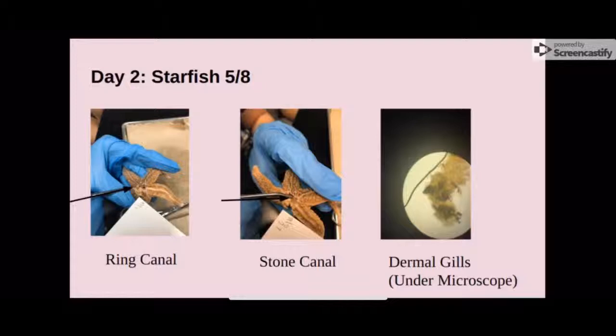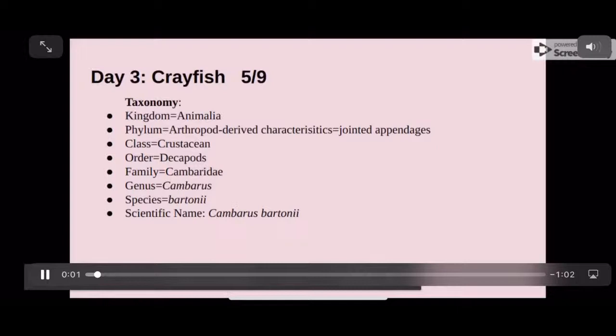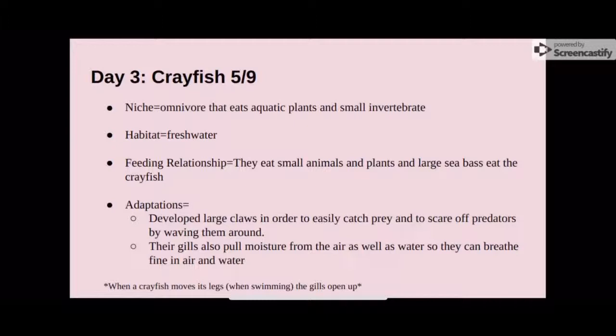The third organism that we dissected was the crayfish. Its derived characteristic is having jointed appendages, and its scientific name is Cambarus bartonii. The niche of the crayfish is that it is an omnivore that eats aquatic plants and small invertebrates. Its habitat is freshwater, and its feeding relationship is that it eats small animals and plants, and large sea bass eat the crayfish.